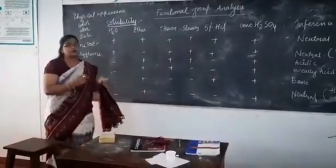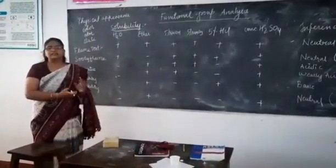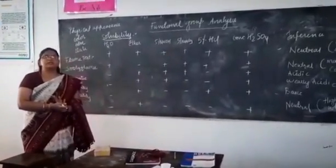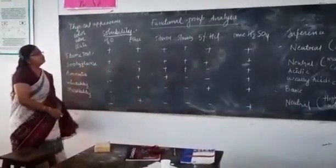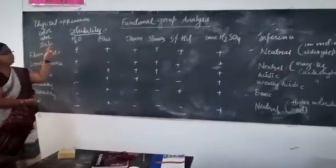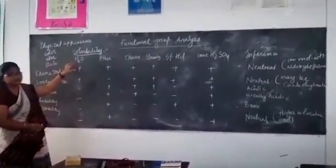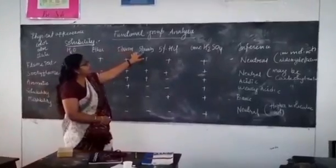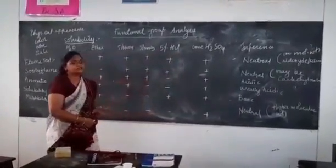This principle applies here: like dissolves like. Polar substances will be miscible with polar solvents. Non-polar solutes easily dissolve in non-polar solvents. We will see the solubility chart for different compounds. You have to check solubility in different solvents like water, ether, 5% sodium hydroxide, 5% sodium bicarbonate, 5% HCl, and concentrated sulfuric acid.